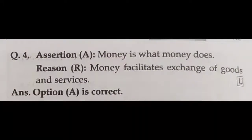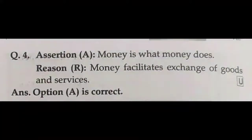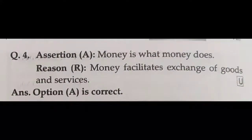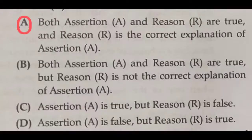Assertion-reason question number four. Assertion: money is what money does — that is correct. Reason: money facilitates exchange of goods and services — that is the correct explanation for assertion A. Both assertion and reason are true and reason correctly explains assertion. So option A is the correct answer.